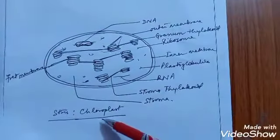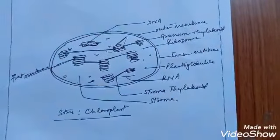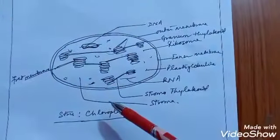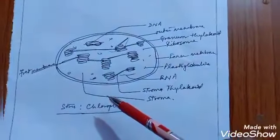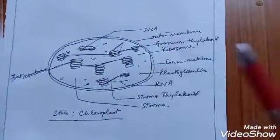Now we look at the chloroplast structure, where the light reaction takes place. The light phase and dark phase both occur within the chloroplast. The chloroplast is the organelle responsible for the total process of photosynthesis. To understand where the light dependent phase and light independent phase occur, we need to examine the chloroplast structure.